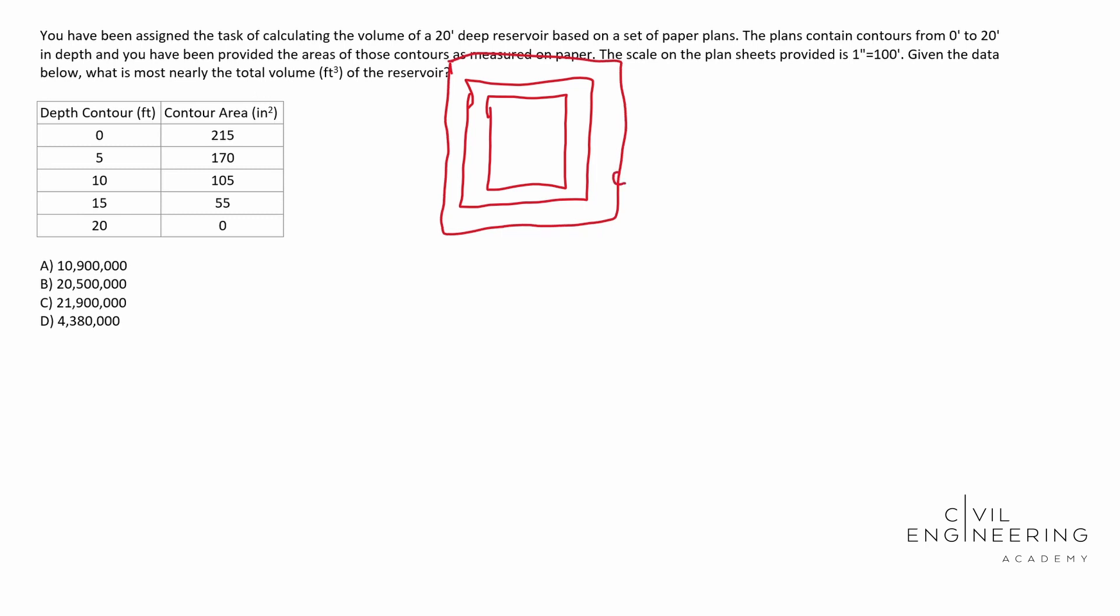So this would be the zero contour. This would be the five contour. This would be the 10 contour. We can go on and on. We have 15 and then the 20 is in the middle there. Let's imagine that's the middle. Basically we just found the areas of these squares and that was measured on the sheet of paper, which is in inches. So we're going to have to convert that over to cubic feet by using the scale that's provided to us. Hopefully that makes sense there.